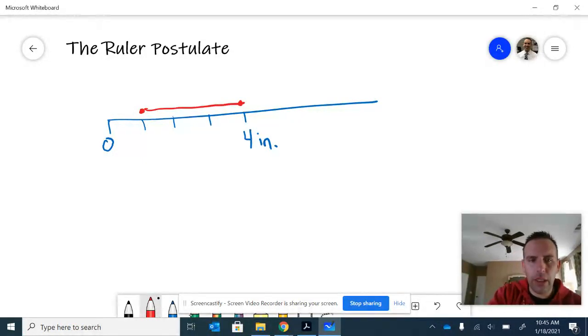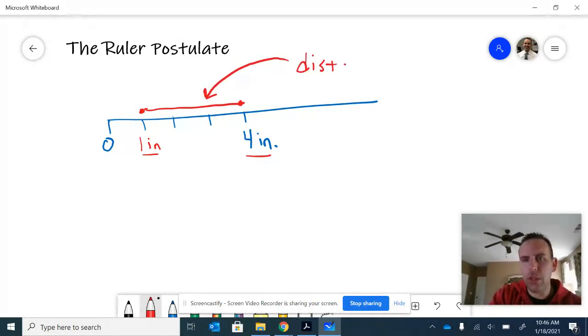The other way to do it though is to read the markings. If this is the one inch mark and this is the four inch mark, then the distance here, the distance is equal to the difference between the numbers. The difference.